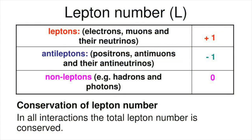Lepton number is the total number of leptons present in a system minus the total number of antileptons. Lepton conservation is a rule which states that the net number of leptons before and after an interaction must be the same.